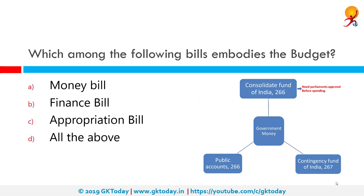Which among the following bills embodies the budget? The correct answer is the Appropriation Bill. An Appropriation Bill, also known as a Supply Bill or Spending Bill, is a proposed law that authorizes the expenditure of government funds. It sets money aside for specific spending, and in most democracies approval of the legislature is necessary for the government to spend money.